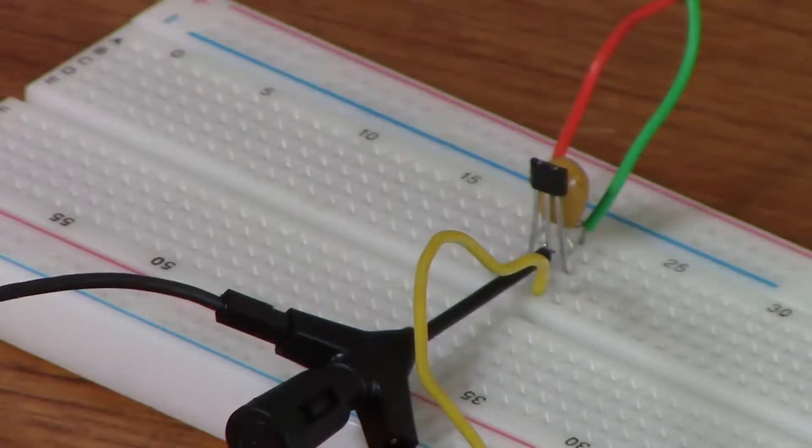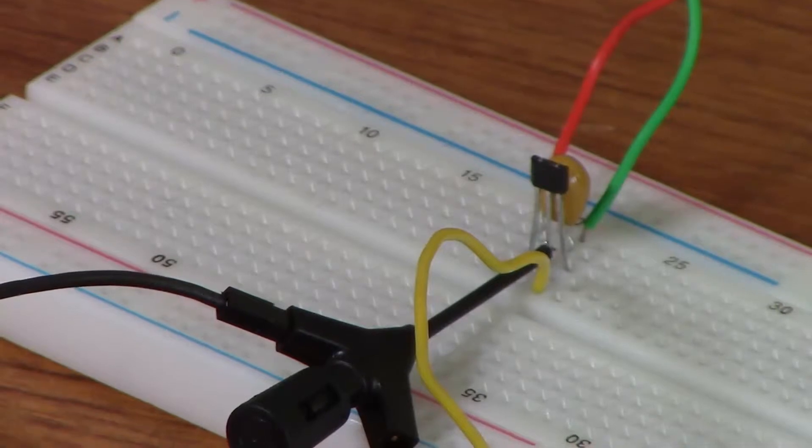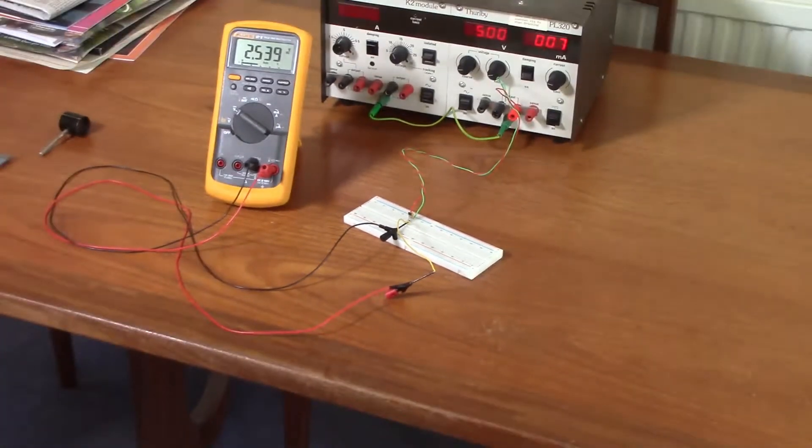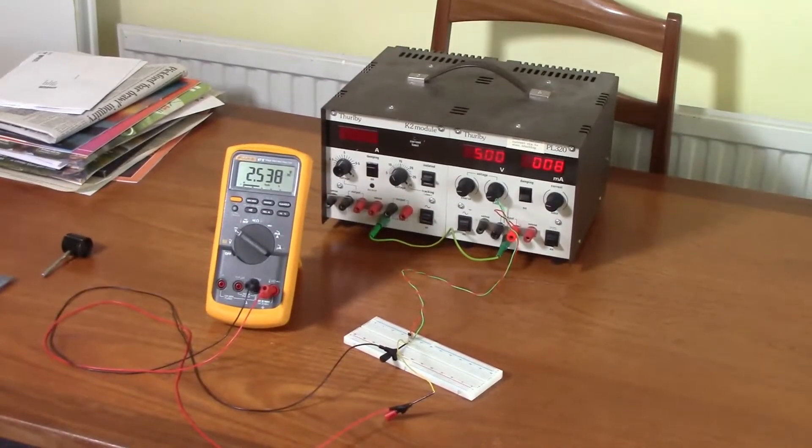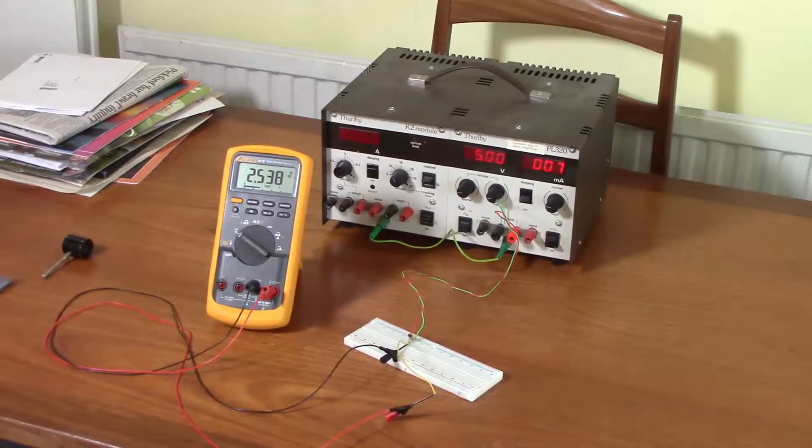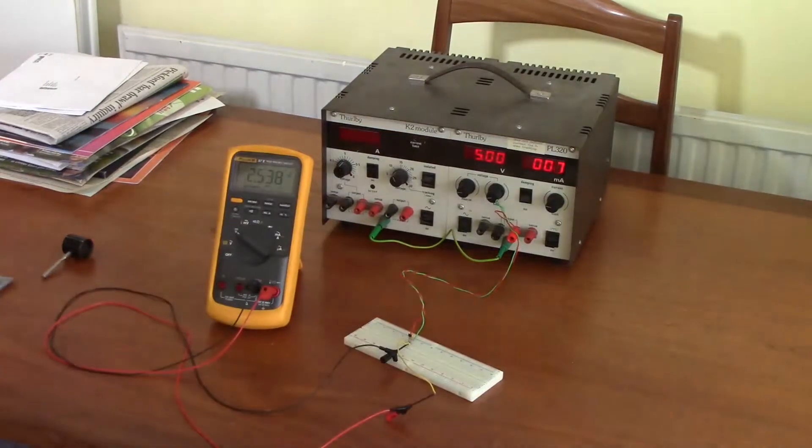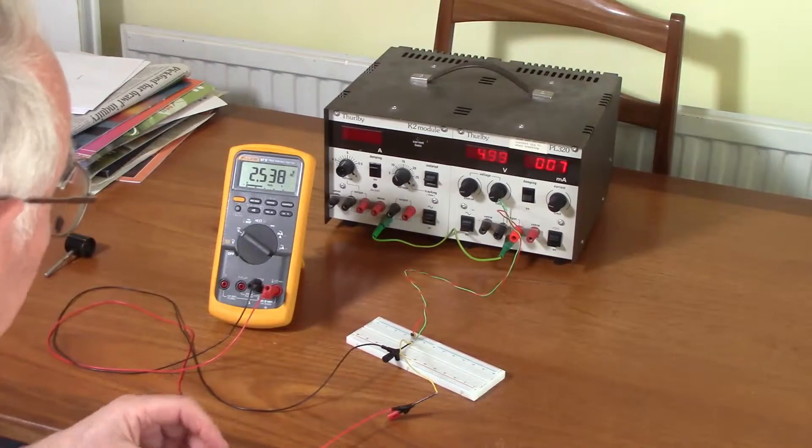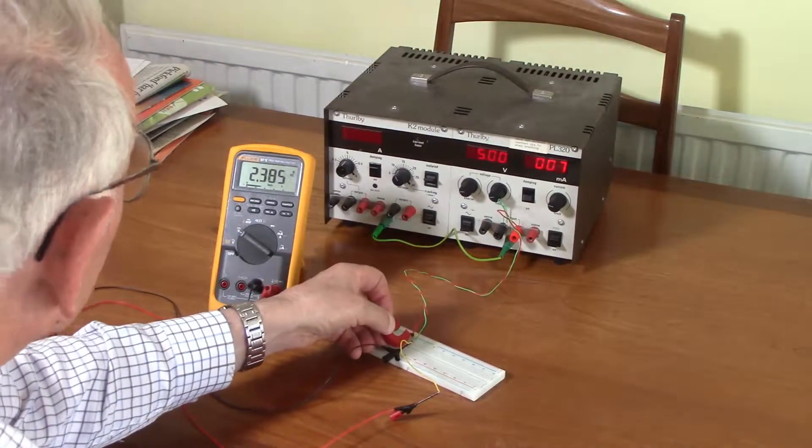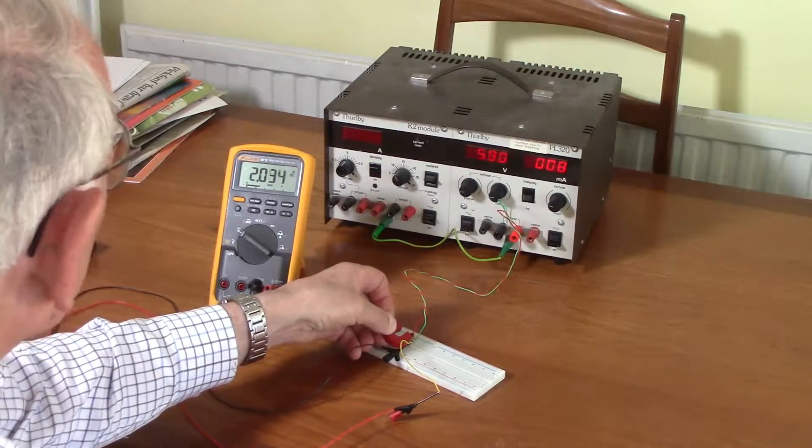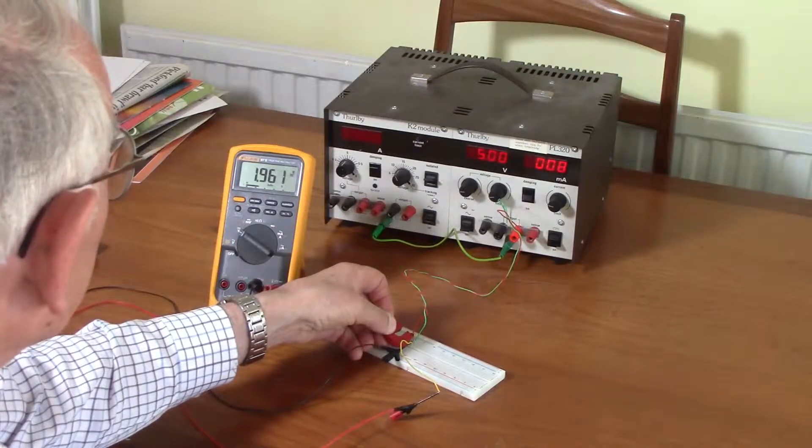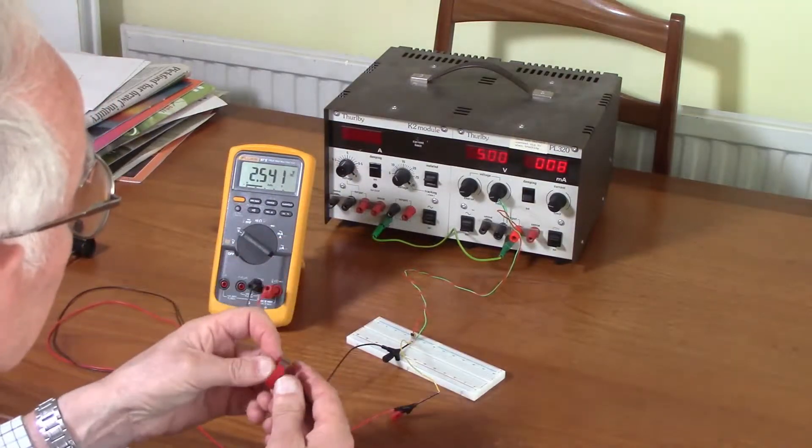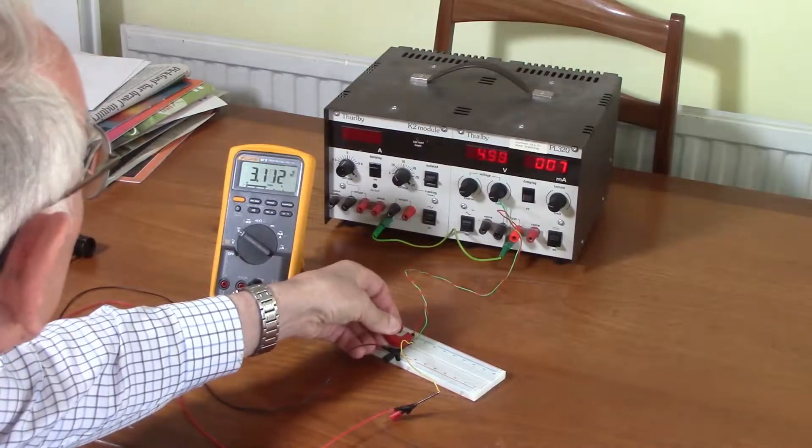This little black thing here is a linear Hall effect sensor which produces a voltage of two and a half volts with no magnetic field. One way round the voltage goes down, and the other way it goes up. So that's going from two and a half to three point one with one pole and two and a half to two point one on the other.